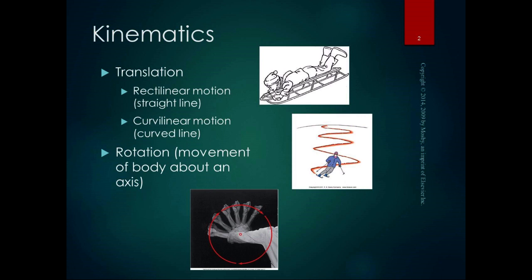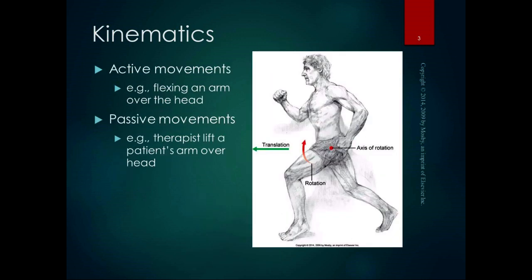Every point on the body is moving together to get from point A to point B, so you can think of translation as getting from point A to point B. Rotation is the movement of a body — meaning a thing or a part — around an axis. For example, someone flexing their elbow involves movement of that body segment around the axis of the elbow. You can have both rotation at the joints and translation of the whole body within the same activity.